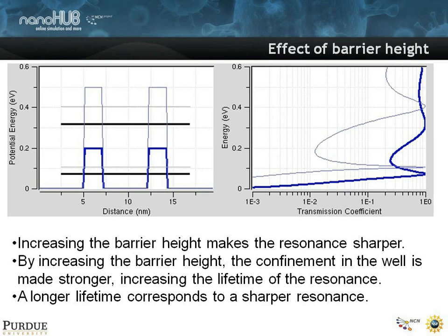Making the barriers taller corresponds, in a sense, to increasing the Q factor of your Fabry-Perot filter — it makes it of higher quality. Going back to the particle view: as your particle bounces in that box, the harder the wall is, the longer it's going to stay in that box. And that is associated with the line width — how sharp is that line, or in quantum mechanical terms, how well is that energy defined for that electron.